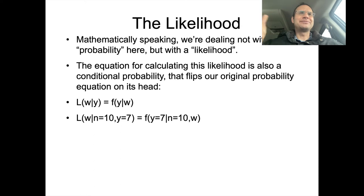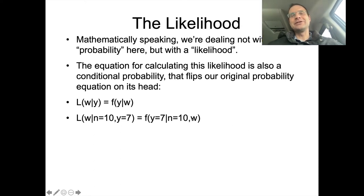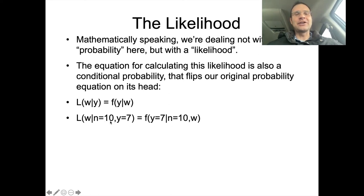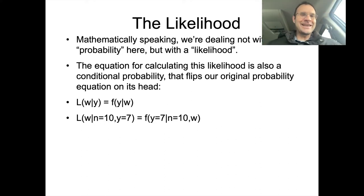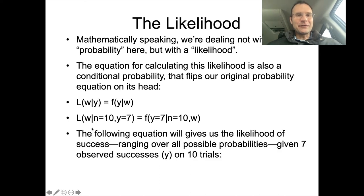If I hand you a coin, you would assume maybe W equals 0.5, but you don't necessarily know until you try it out. You don't normally have a situation where you have a known probability for some outcome. Instead, you run the experiment, get seven successes out of ten trials, and from that try to figure out what's going on underneath — going from phonetics to phonology, if you will. The likelihood equation ranging over all possible probabilities given seven observed successes on ten trials will look a lot like the binomial equation, because it basically is.